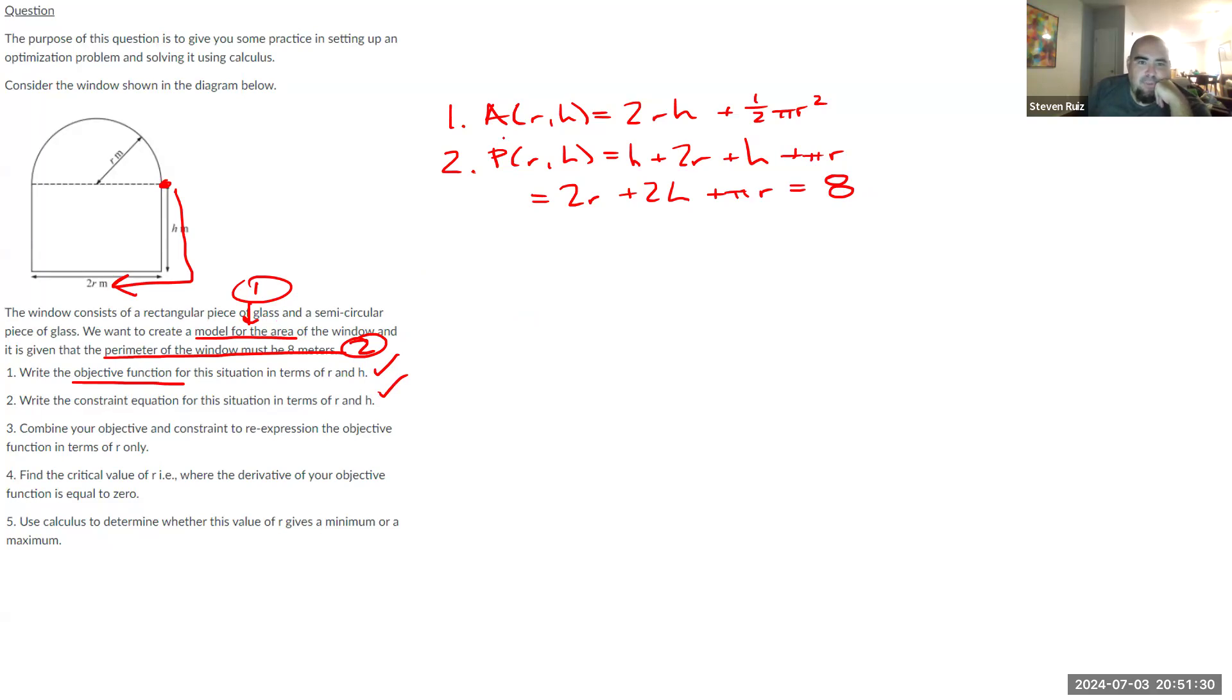Now I want to combine these. Both of my objective and my constraint equation are functions of two variables. I would like to combine them in such a way so I only have one variable. So I want to combine these so that it's a function of R only. In order to do that, I'm going to take my constraint equation and solve it for H. So 2H = 8 - 2R - πR. If I divide through by two, I get H = 4 - R - ½πR. So now that I have that expression for H in terms of R, what can I do with it?